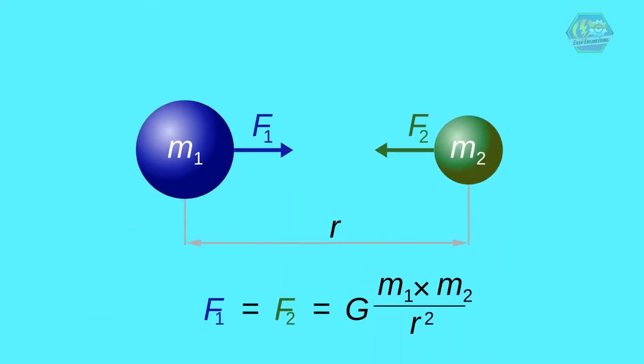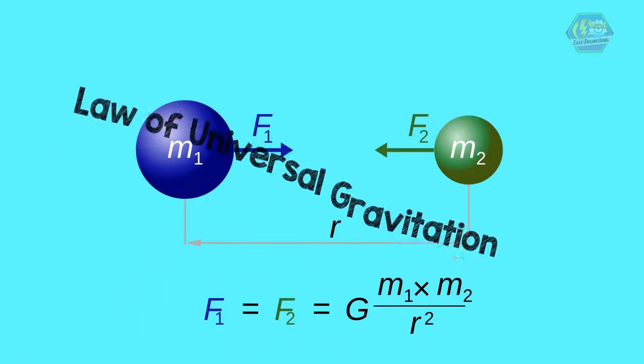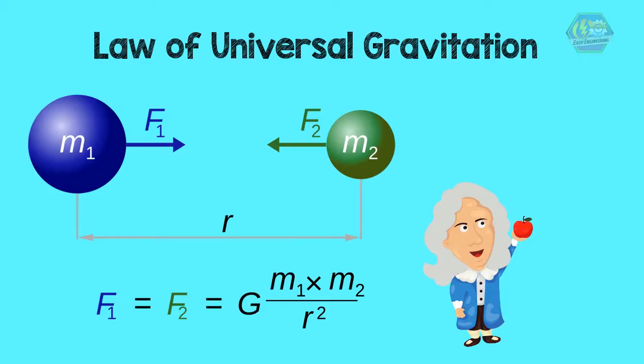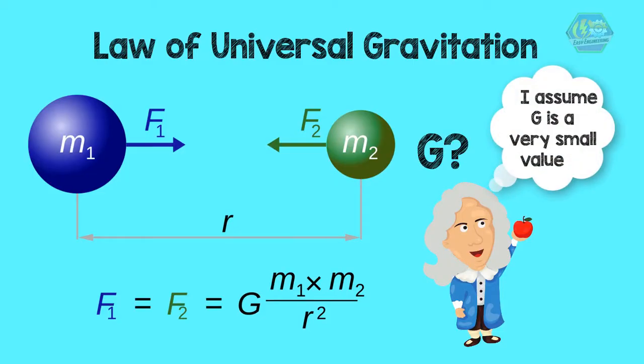This makes the new equation. And this equation is called the law of universal gravitation. But note that Newton had no idea of what the value of G was. He just knew it would be a very tiny number, or in other words, it was just a proxy.